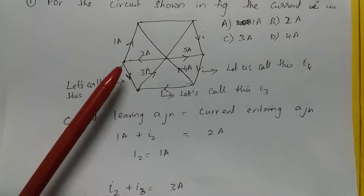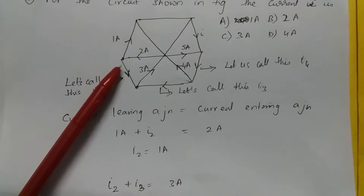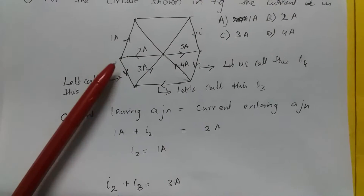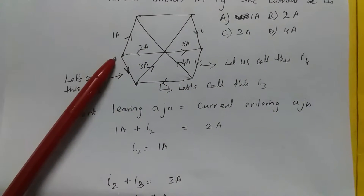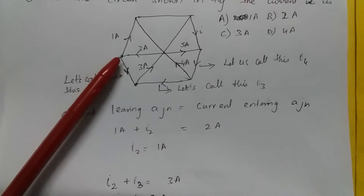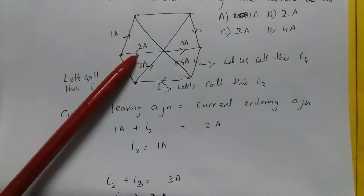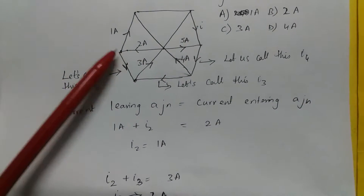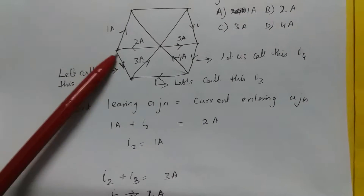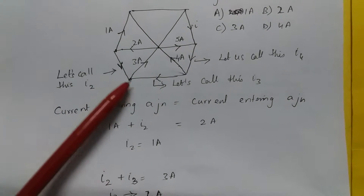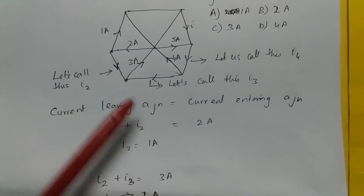The currents entering a junction are equal to the currents leaving a junction. Applying this formula: 2 amps is entering and 1 amp is leaving, so I2 must also leave. So I2 is 1 amp.